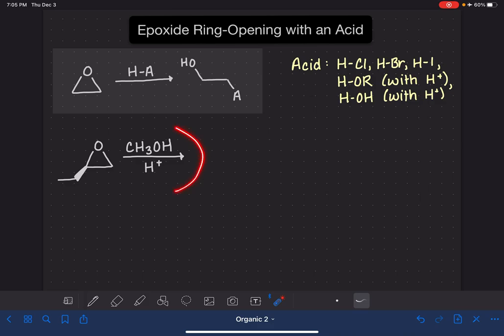Let's take a look at the mechanism for this reaction. I've got this particular epoxide that we're going to use as an example. And we are using an alcohol as our ring opening reagent. We've got a little bit of acid present for that.